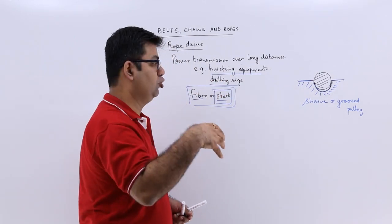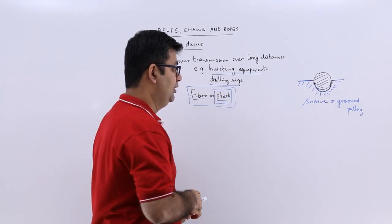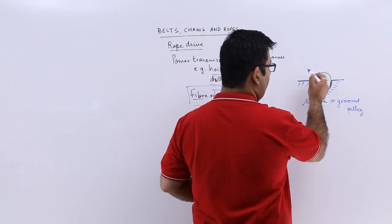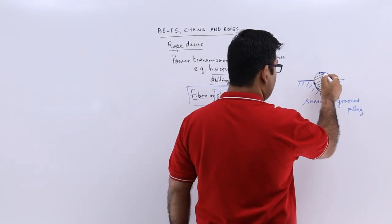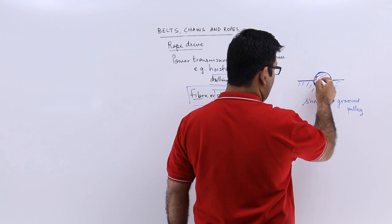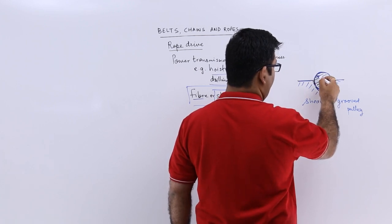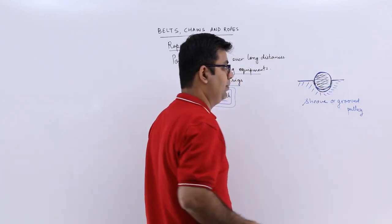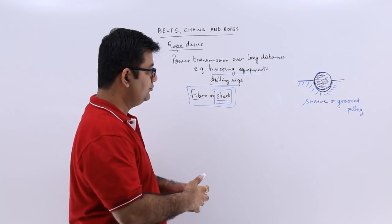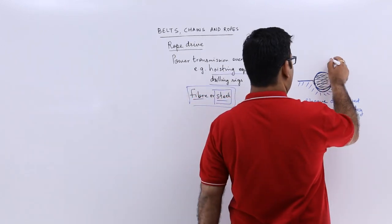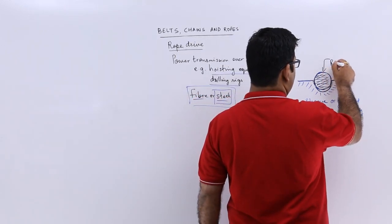And in this groove sits the rope. Now generally the ropes are of a circular cross section. So this is how your rope would look like on most occasions. So this is the rope cross section.